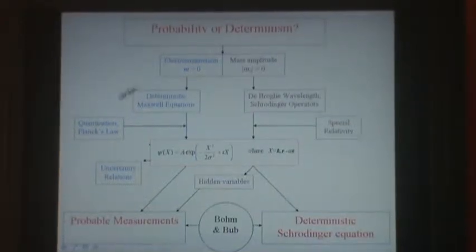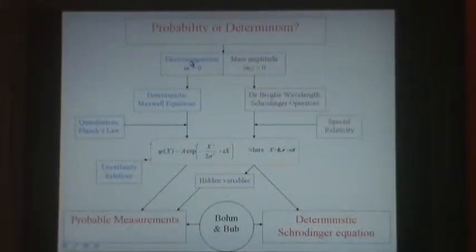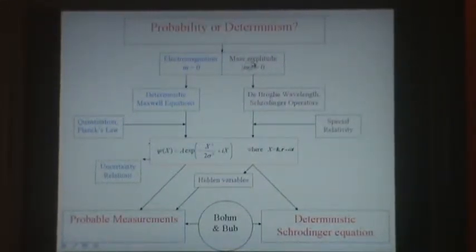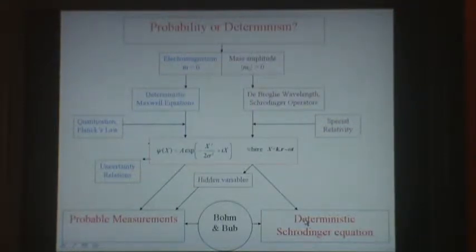The screen is in four parts: massless particles on the top left, massive particles on the top right, probability on the bottom left, and determinism on the bottom right.